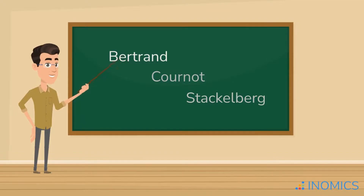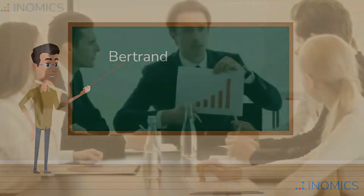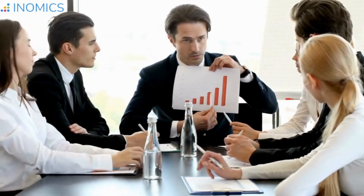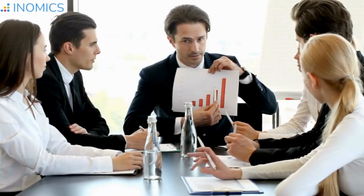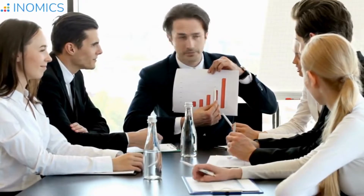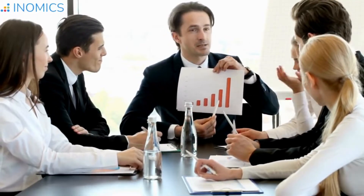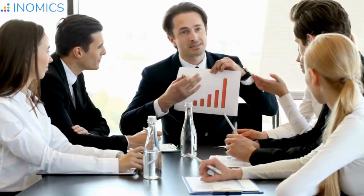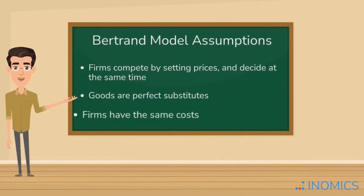First, Bertrand competition is the most straightforward of these. In this type of competition, there could be any number of firms competing and they compete by setting prices. All firms choose the price that they will sell their output at and they choose at the same time. In this model, we assume that the goods are perfect substitutes and that firms have the same costs.